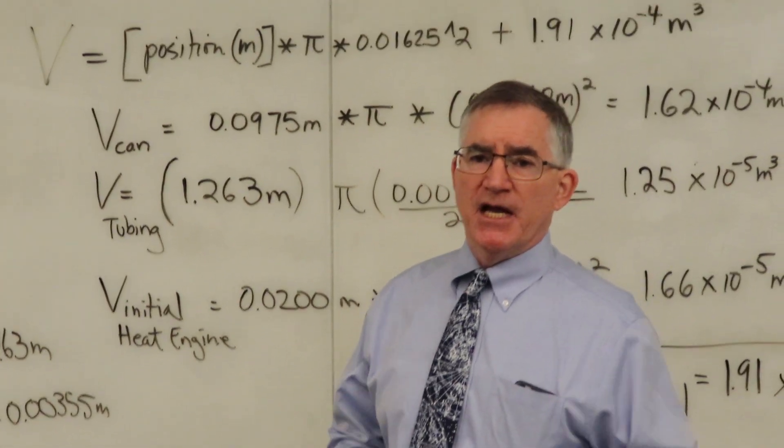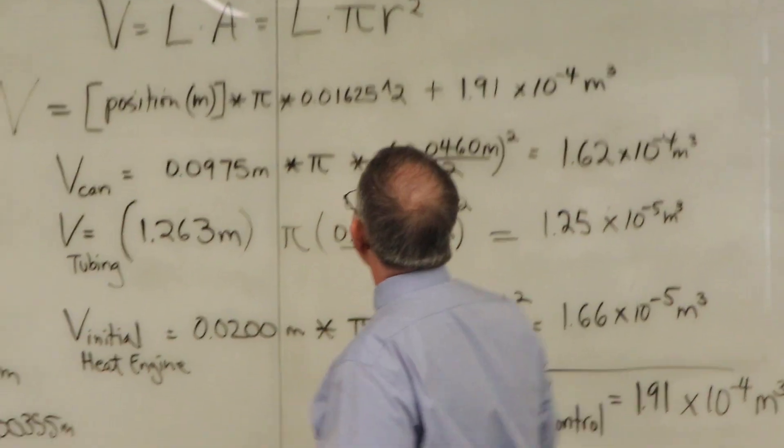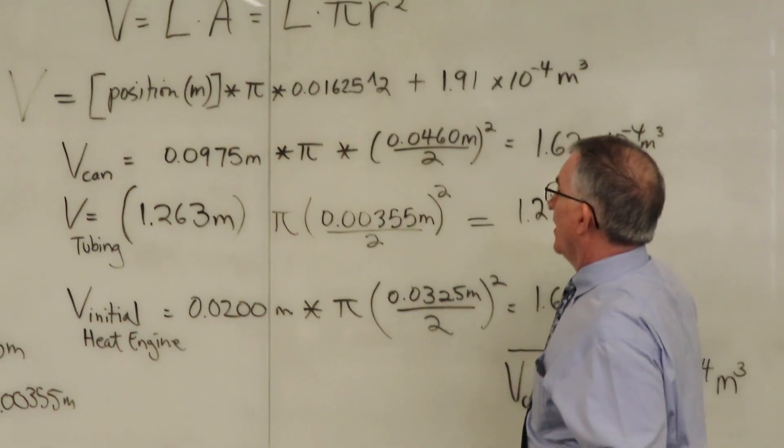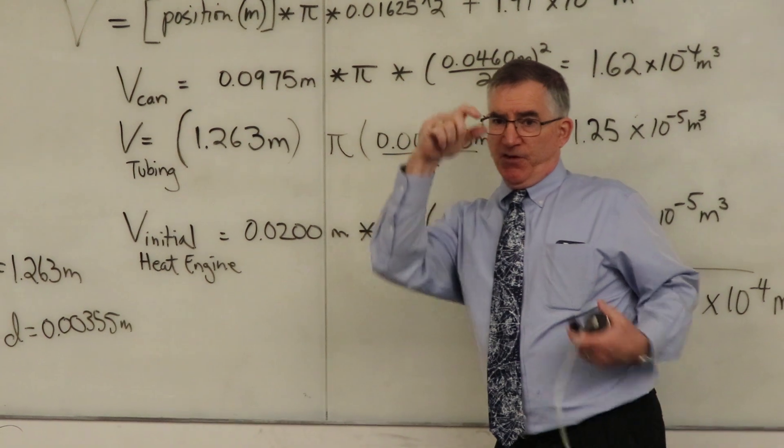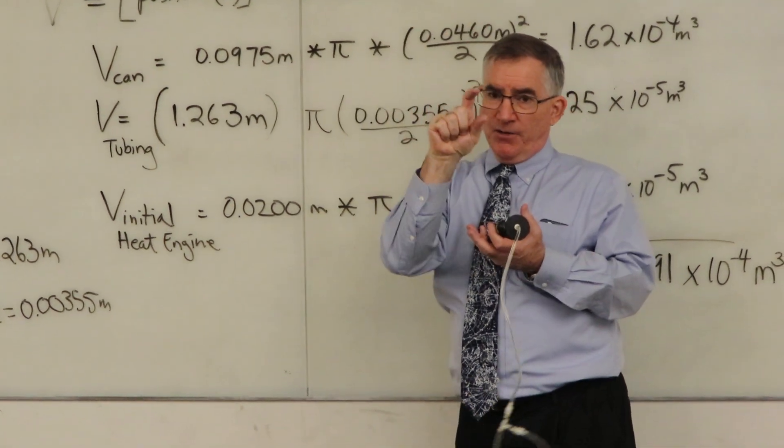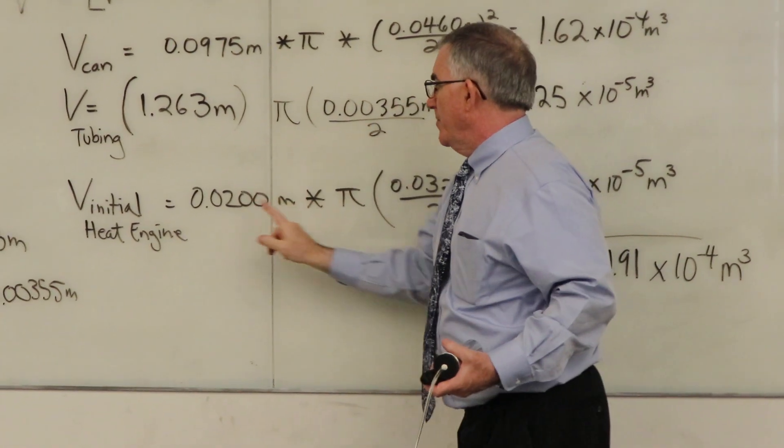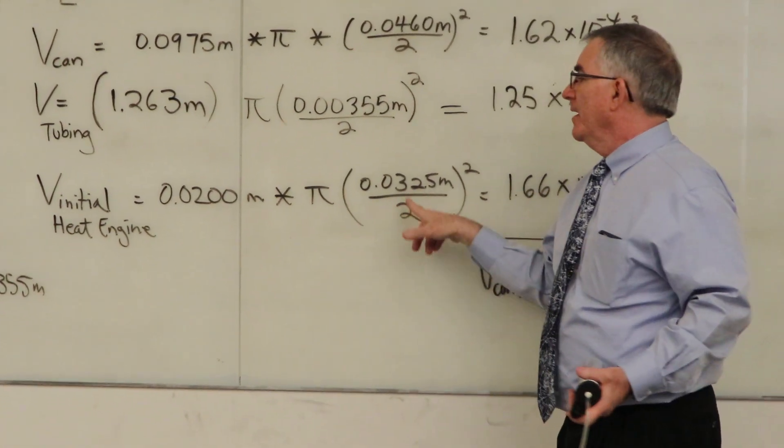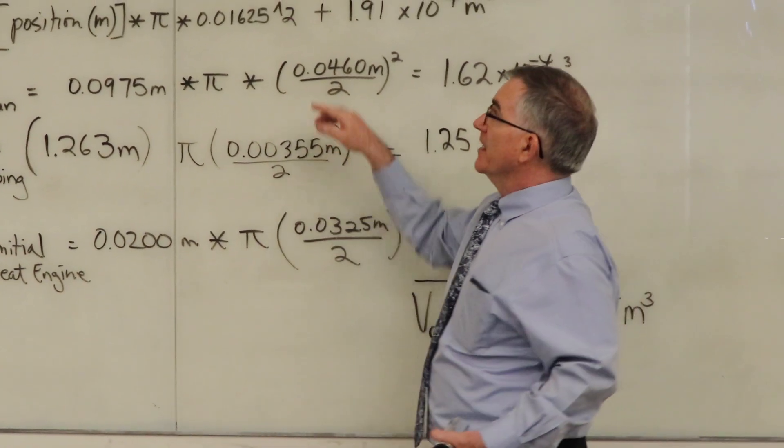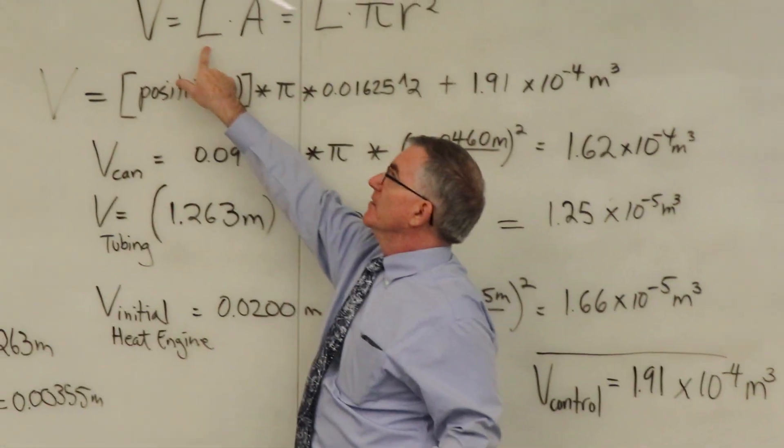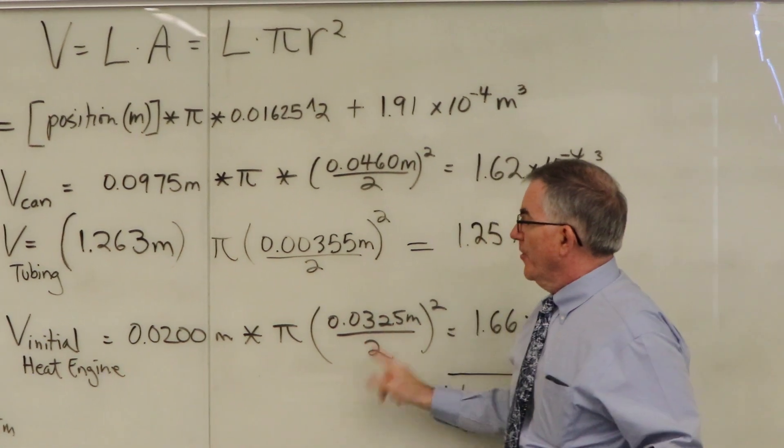Then the last bit of volume is the volume that's in the heat engine where it's going to lift the weight. And that particular cylinder is, it's right here, so the heat engine right here, it's 2 centimeters, so the piston is in the cylinder. There's 2 centimeters between the bottom of the cylinder and the bottom of the piston. And then the diameter of the cylinder is 3.25 centimeters, which, remember, you've got to divide by 2. And to get the volume of a cylinder, you've got to take the length times the area, and the area is pi r squared. So this is diameter divided by 2.